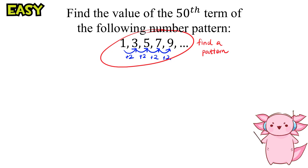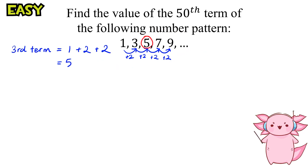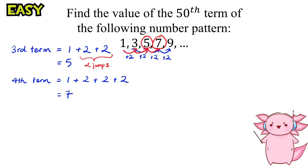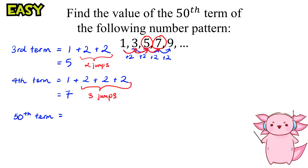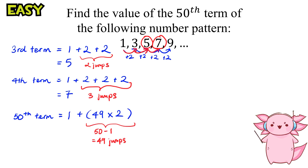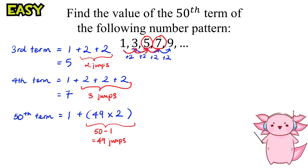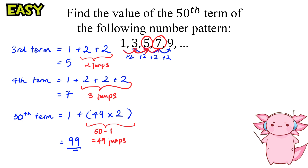Let's try to find a pattern here. For the third term, we can see that it requires two jumps. And for the fourth term, it requires three jumps. Then we know that for the 50th term, it requires 50 minus 1, which is 49 jumps from the first term 1. So 1 plus 49 times 2 gives us the final answer of 99.